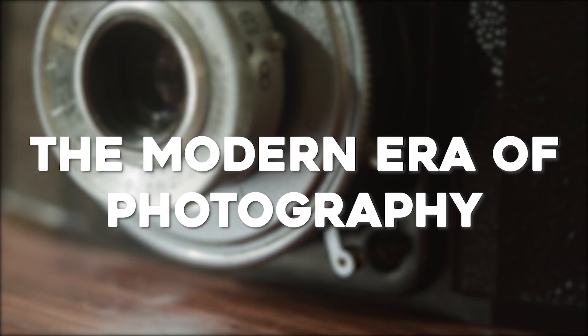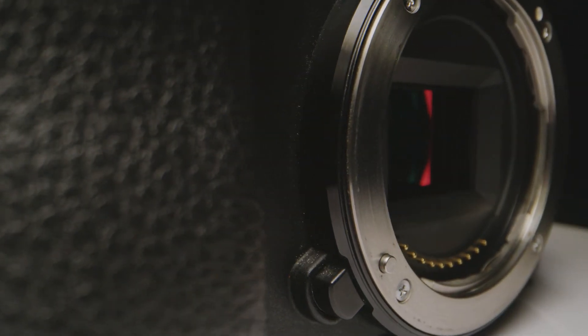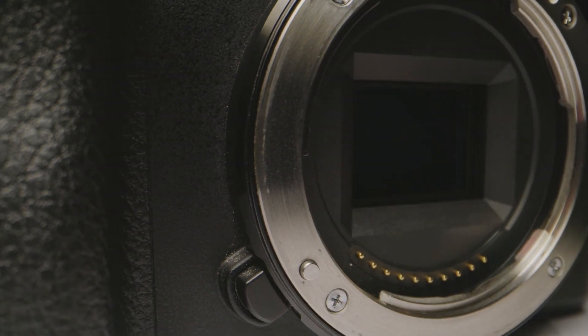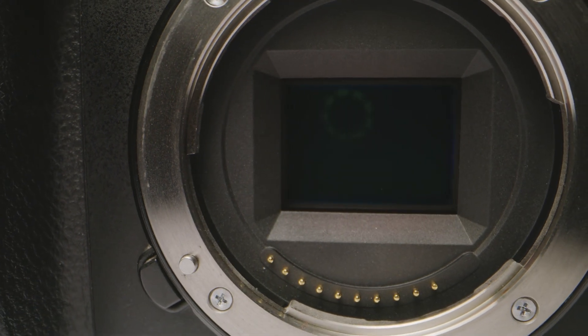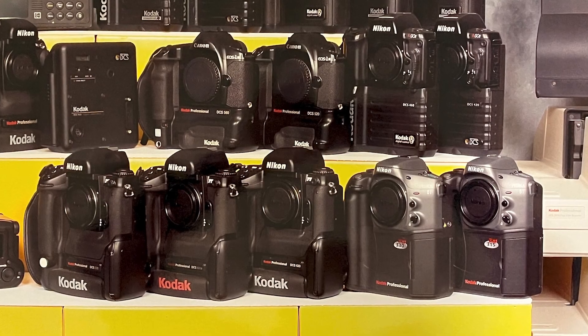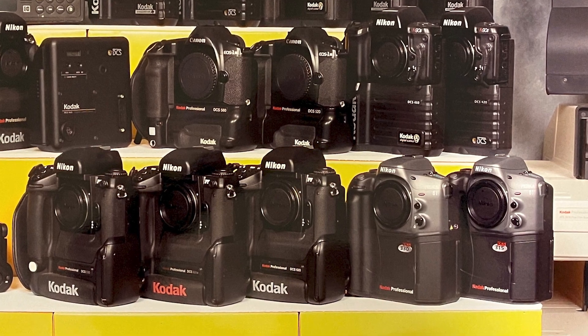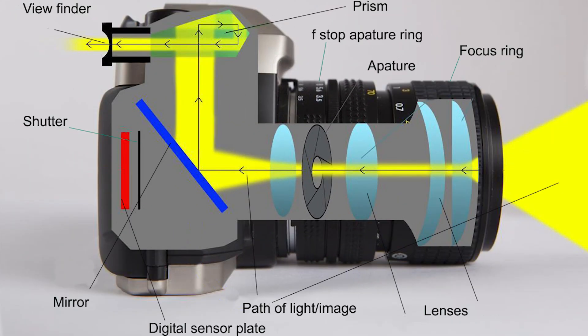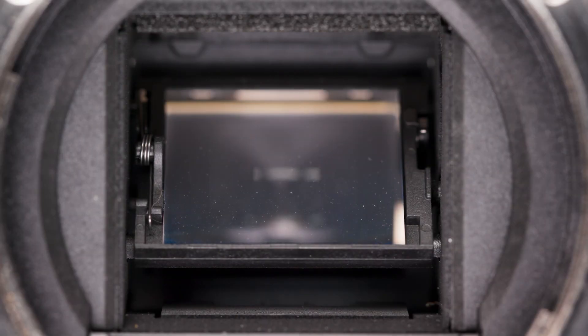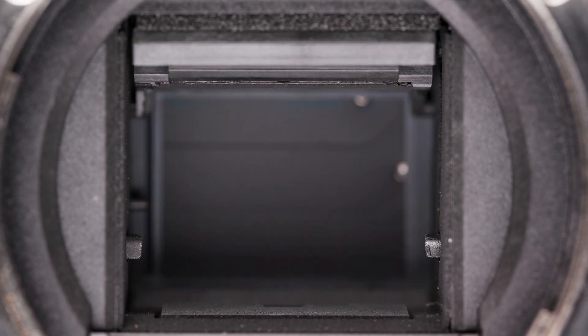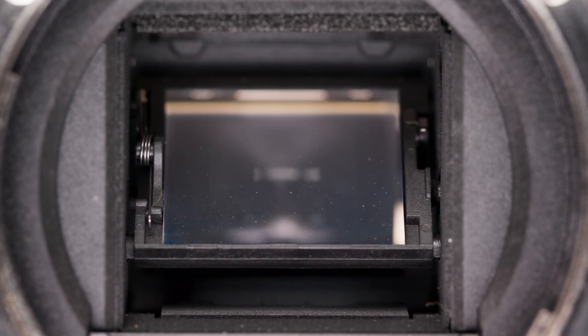The Modern Era of Photography. By the end of the 20th century, the camera was going through a paradigm shift with the advent of digital photography. The first digital cameras, such as the Kodak DCS series, emerged in the 1990s. Unlike film, digital sensors converted light directly into electronic signals, allowing for instant image capture and preview. Digital sensors offered advantages such as adjustable ISO settings, improved dynamic range, the ability to store a large number of images on memory cards, and the convenience of not needing film rolls anymore.